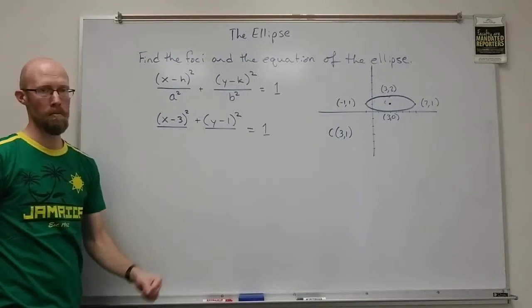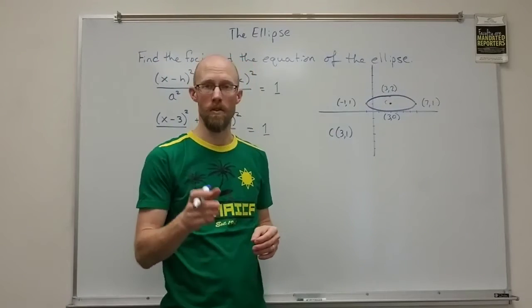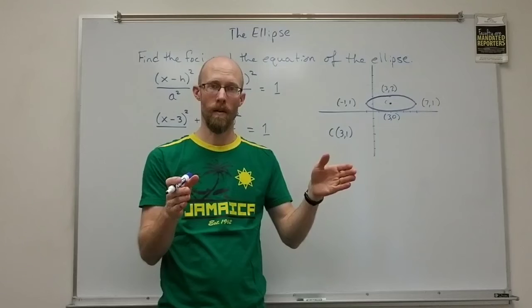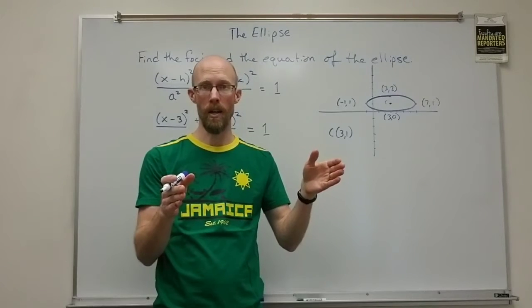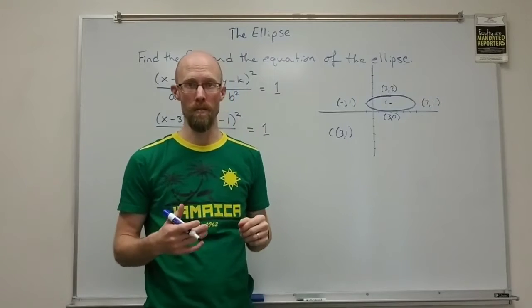Now I need to figure out what the a and the b are. Remember the a and the b refer to the distance from the center to the vertex that's the a value and the distance from the center to the edge of the minor axis. That's the b value.